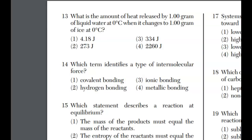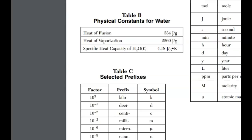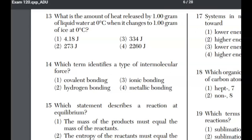Looking at question 13, what is the amount of heat released by one gram of liquid water at zero degrees C when it changes to ice? Going from liquid to solid is heat of fusion, which occurs at constant temperature. We have the constant for heat of fusion on the reference table. Heat of fusion is found on reference table B: 334. The answer to 13 is choice three.